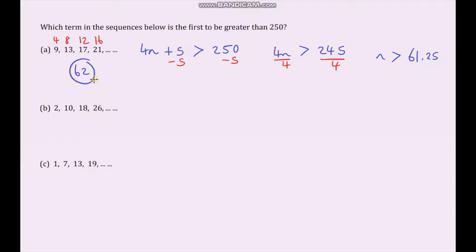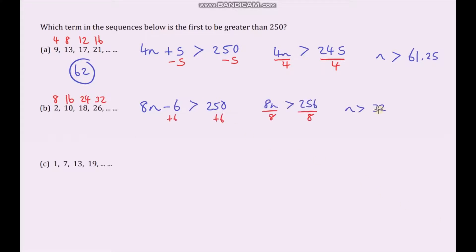For the next sequence, we again find which term is first to be greater than 250. Working out the nth term and setting it greater than 250, we solve the inequality. You might be tempted to say it's the 32nd term, but n is greater than 32. The term number must be greater than 32, and the next integer is 33. So the answer is 33.